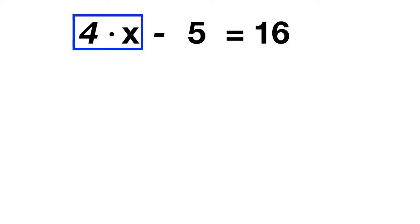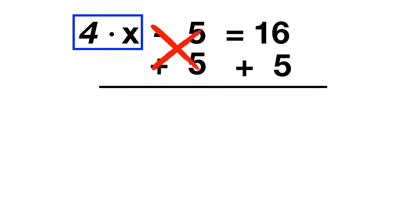We can cancel the minus 5 by adding 5 to both sides. When you solve this step of the equation, what do you get? The minus 5 plus 5 cancels out, so on the left we'll just have 4 times x. On the other side of the equation, 16 plus 5 gives us 21.